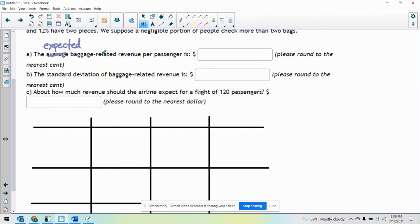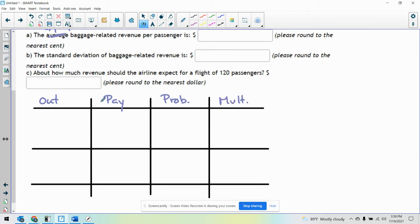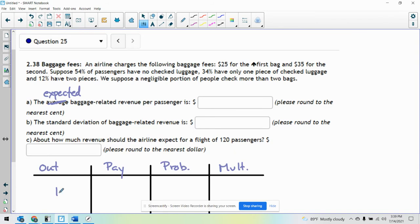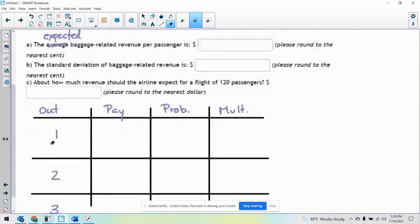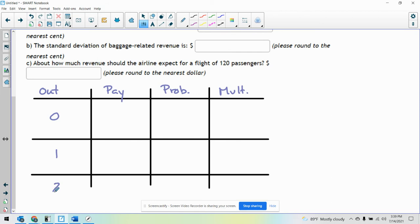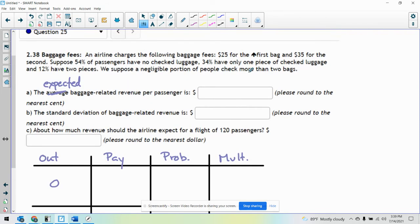There are three possible outcomes, so I'm going to draw three horizontal lines. The first column is going to be outcome, this is going to be payout, probability, and multiply. So outcome, they could have zero, one, or two checked bags. Zero checked bags, one checked bag, two checked bags. And then it says a negligible amount check more than two.